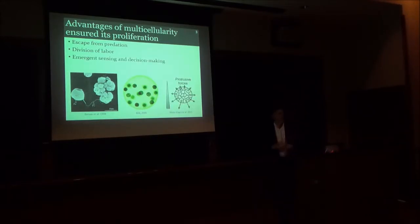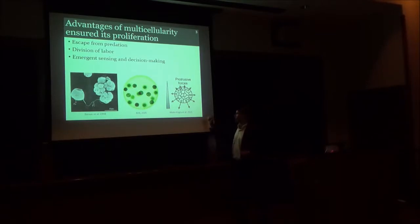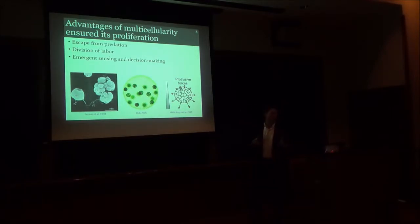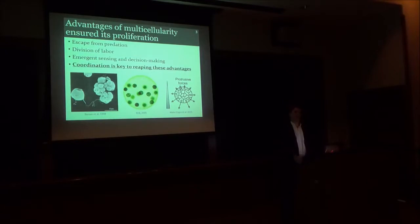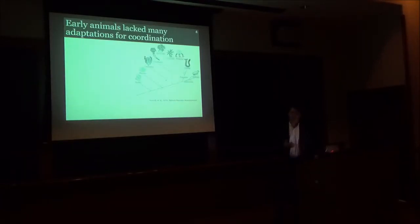There are also emergent advantages to multicellularity, and these include things like improved sensing and decision-making. In an experiment done on cell clusters that were tracking a chemical gradient, what was found was that when these cells grouped together in larger clusters, they could actually use the whole cluster body as a sensor and thereby improve their fidelity in tracking this gradient. The crux of this, however, is that these advantages typically require a lot of coordination. We usually take these for granted because we have a lot of adaptations that enable coordination at scale, such as a central nervous system and fixed anatomies. But this was not always the case.